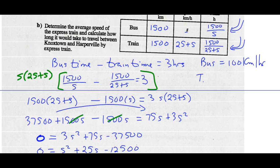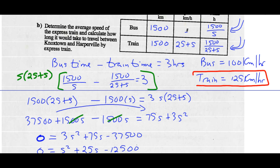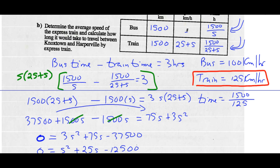The train then must have gone 125 kilometers per hour — that's the average speed of the express train. And it also asks how long it would take to travel between Knox Town and Harperville by express train. Time equals distance divided by speed: 1,500 divided by 125, so the journey would take 12 hours by express train.